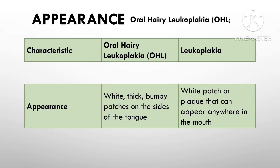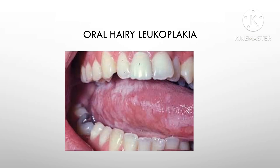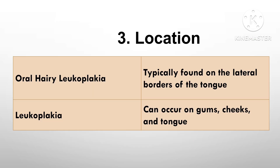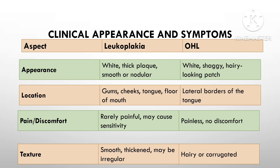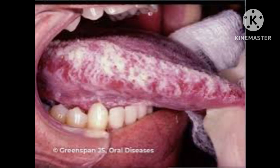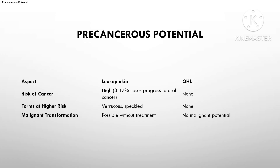In the case of oral hairy leukoplakia, as its name suggests, it has a distinct hairy or shaggy appearance. The white patches are most commonly found on the lateral border of the tongue and often have a raised, corrugated texture. These lesions are usually painless, and many patients with OHL may not even be aware they have them unless pointed out by a dentist or healthcare provider. The hairy aspect is due to hyperplasia of the epithelial cells, which gives the appearance of hair-like projections on the surface.